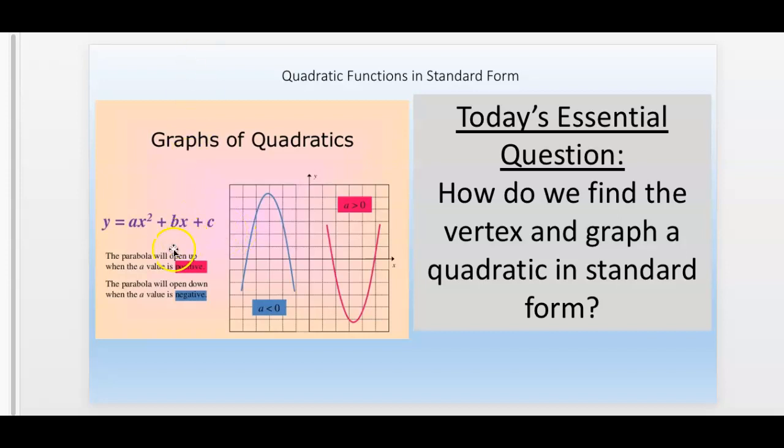If you look over here, the a operates the same way as the a in vertex form. If the a is positive, the graph is right side up. If the a is negative, the graph is upside down.